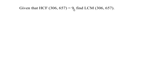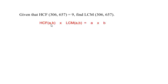306 and 657 is 9, find the LCM of the given same two numbers. Now for solving this we are going to use a formula: HCF of two numbers times LCM of the two given numbers is equal to the product of the same two numbers.